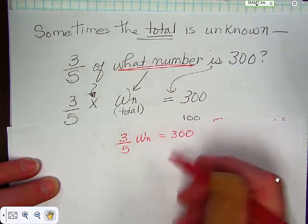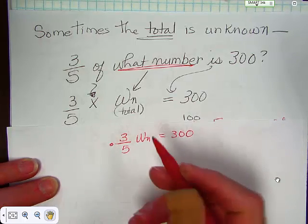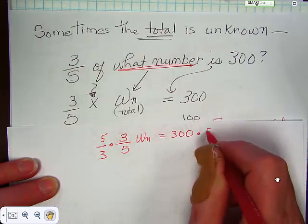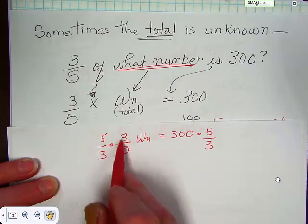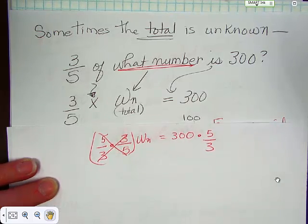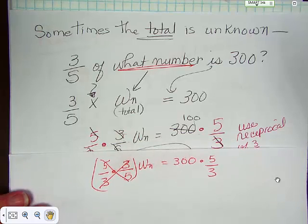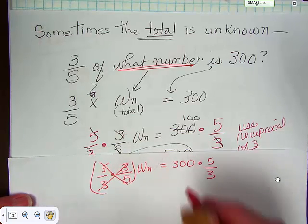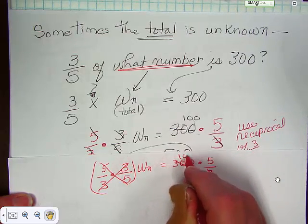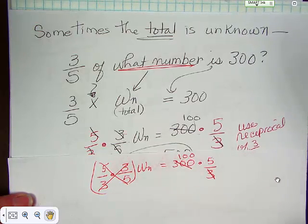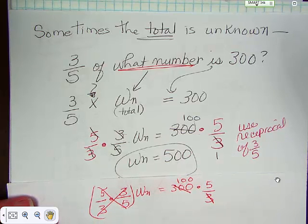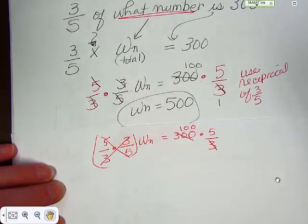Now remember, when we were solving problems, we had to multiply by the reciprocal to get rid of that fraction next to the variable. So this crosses out, it ends up looking like this, and then you can cancel out, which is kind of a nice thing here. Here the three goes out, this goes to 100, 100 times five is 500. So the what number is 500.